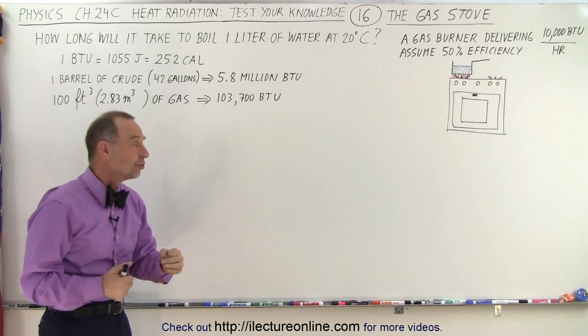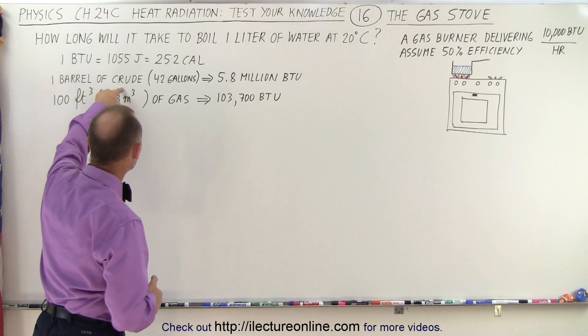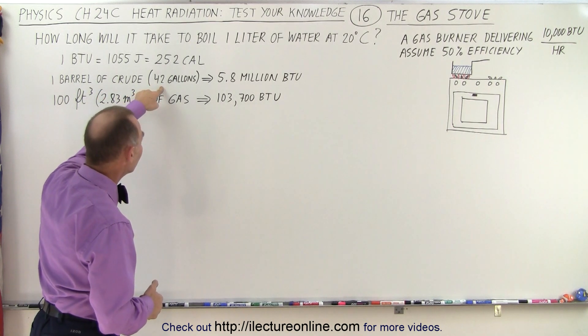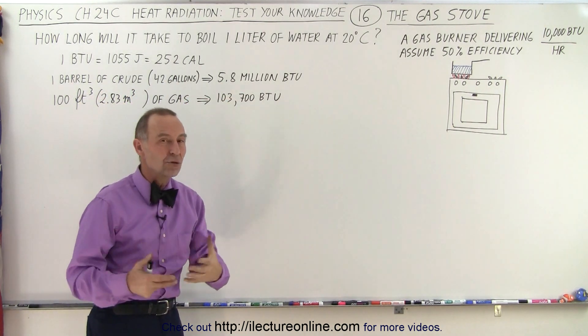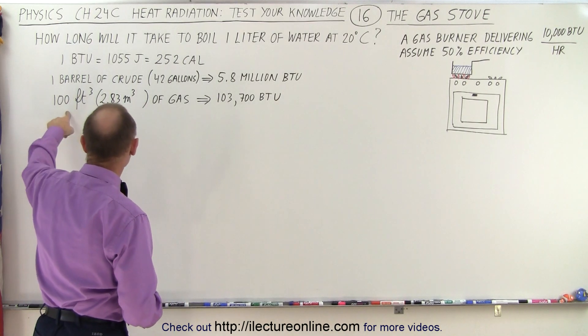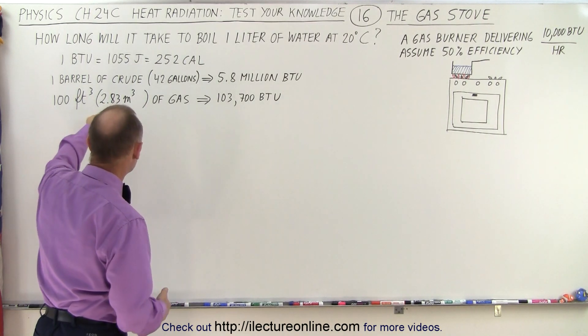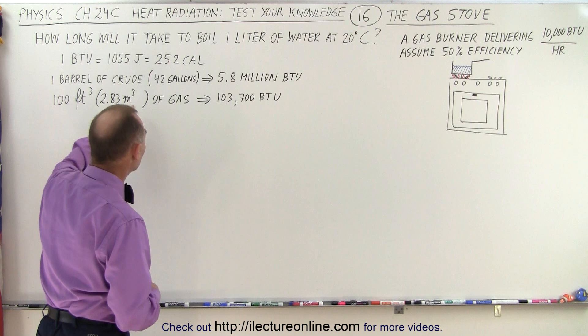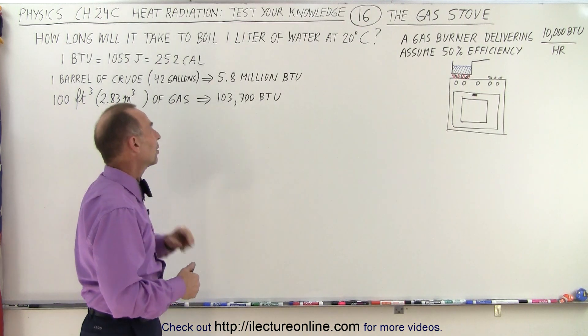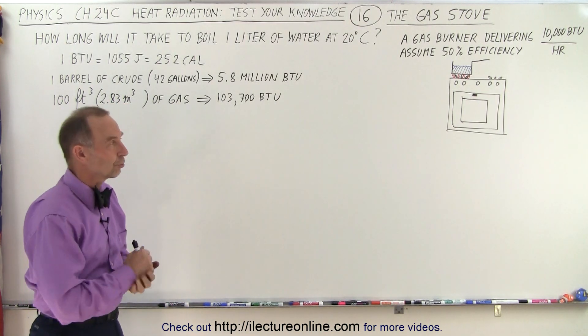Now, as a comparison, a barrel of crude oil, which is about 42 gallons, will give you 5.8 million BTUs of energy and 100 cubic feet of natural gas, which is about 2.83 cubic meters of gas, gives you 103,700 BTUs.